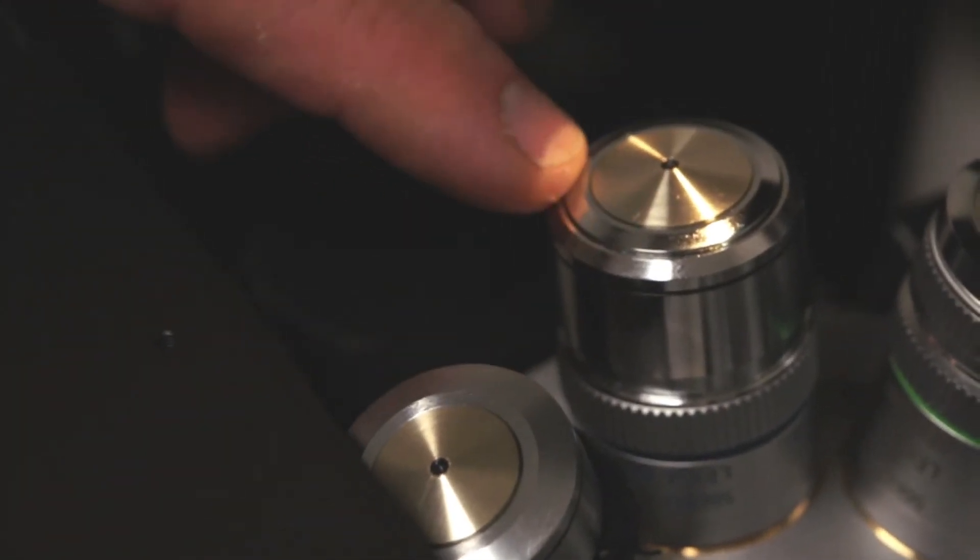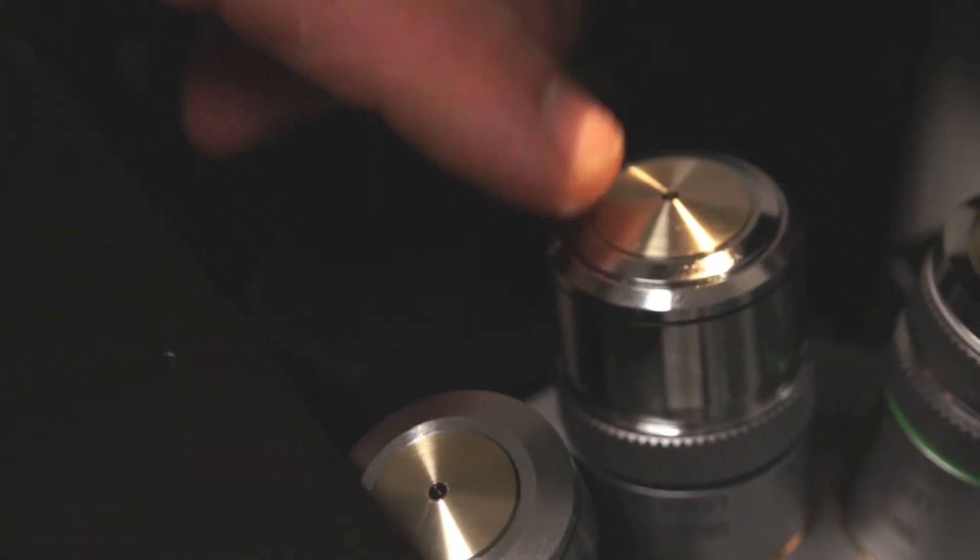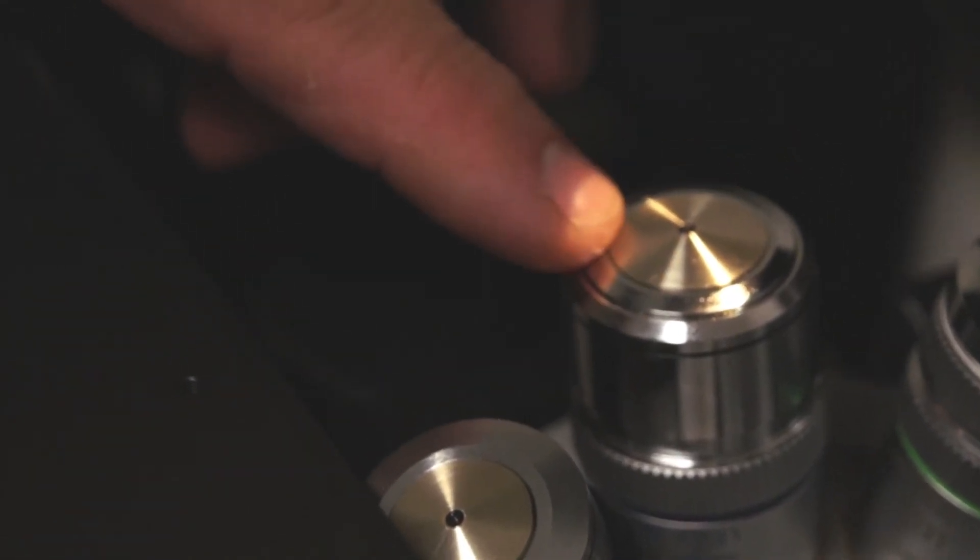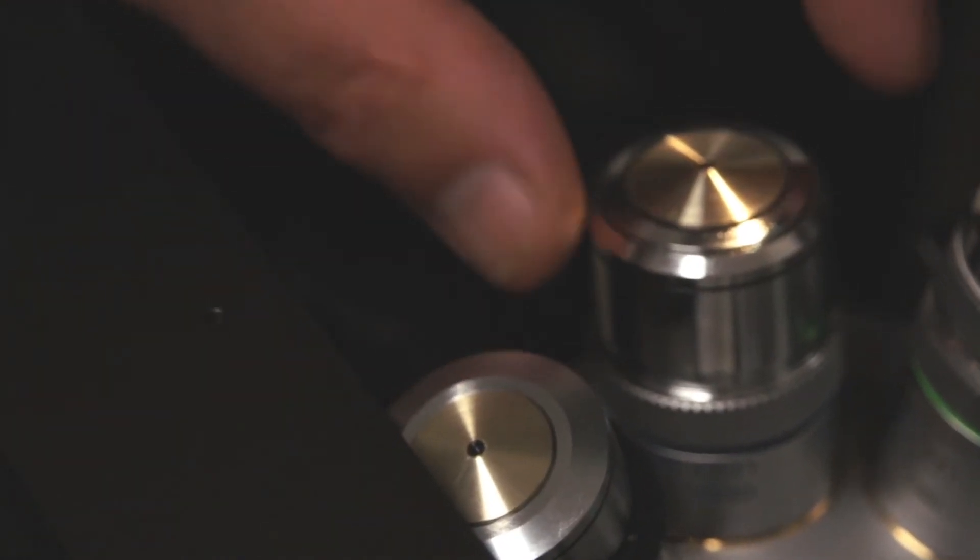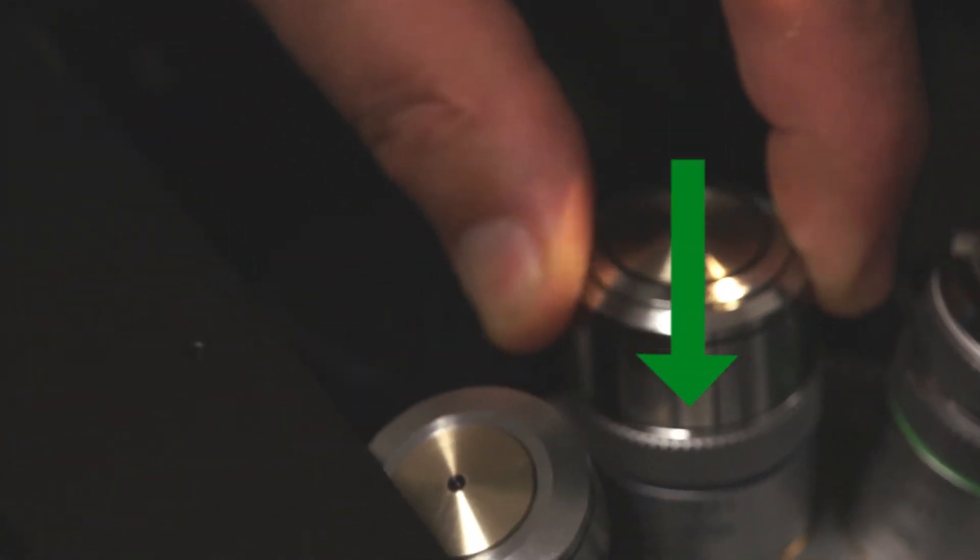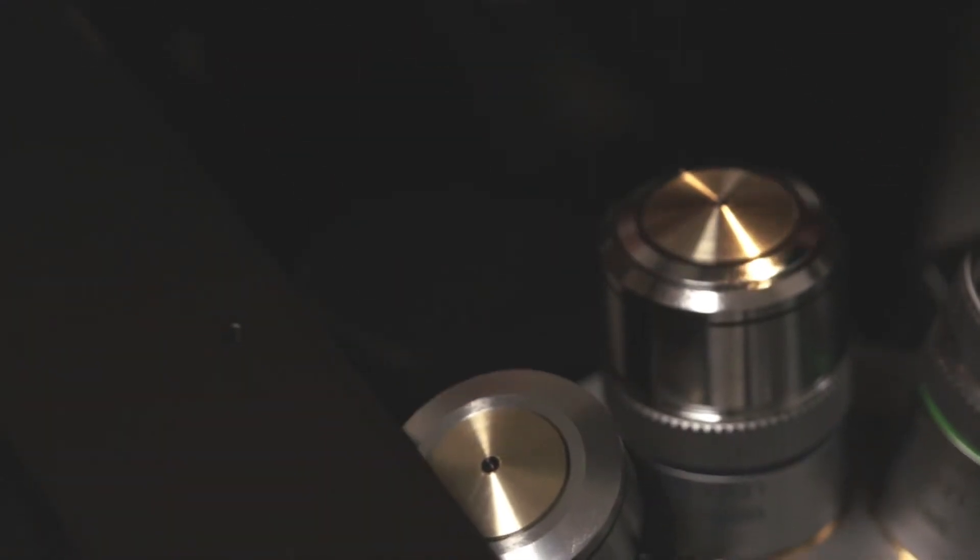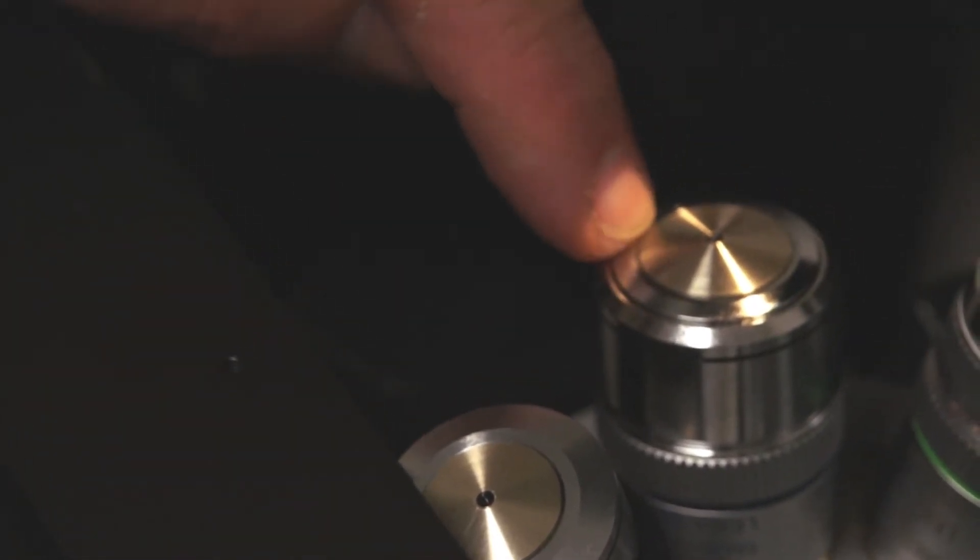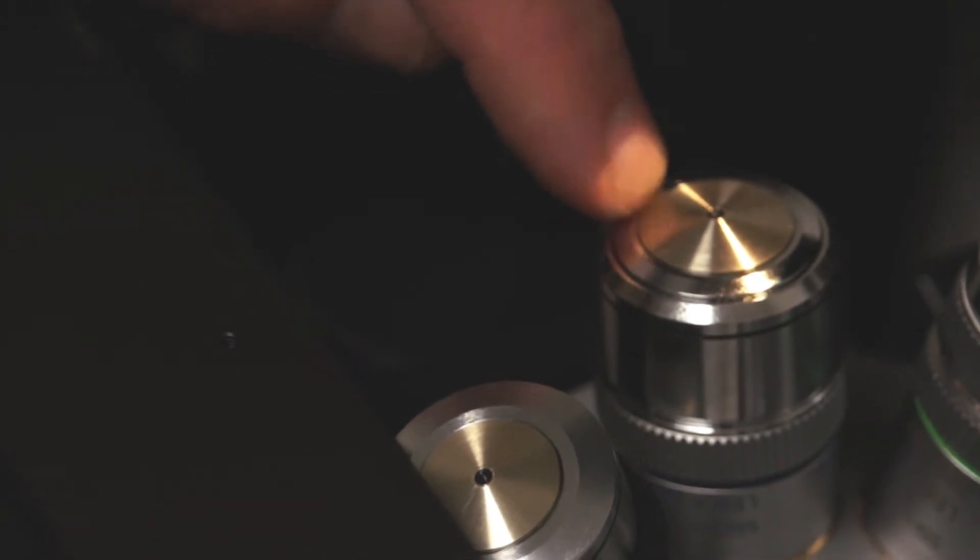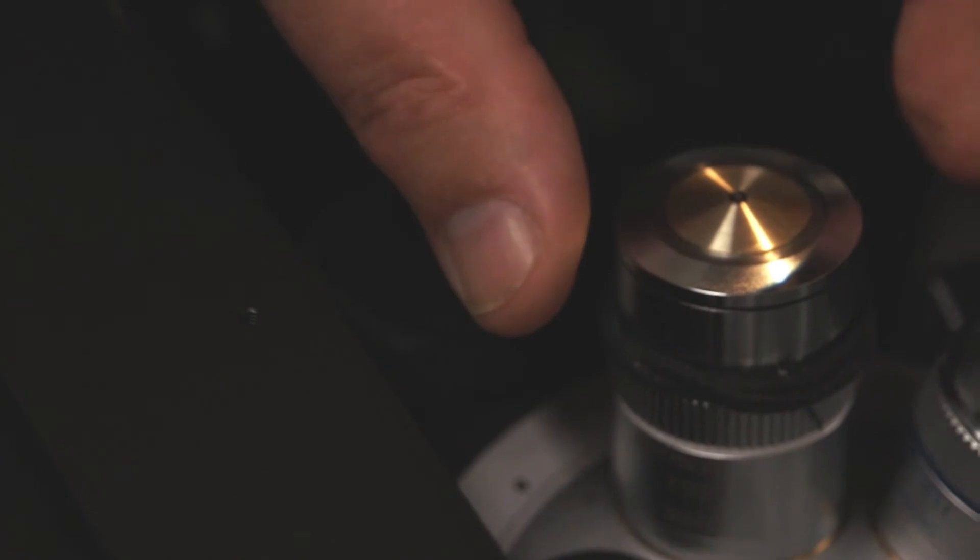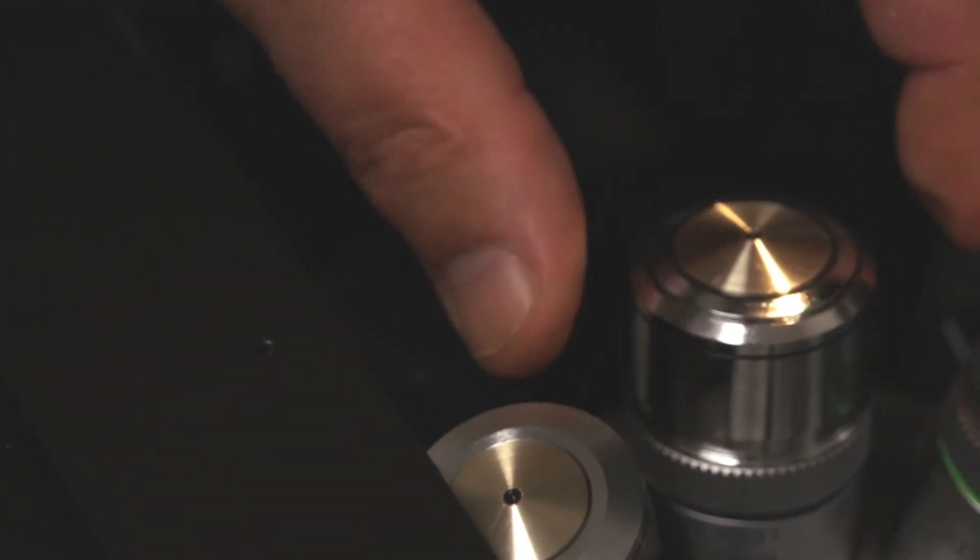Because the 63x objective and the 100x objective are very expensive objectives, they have a unique feature that allows you to lock the front element down and out of the way so that when you are rotating the nose piece, these objectives will not come in contact with the slide. Please keep that in mind as a previous user may have locked it down, so in order for you to do your work, you have to unlock the objective and let it come back to its full height in order for it to work properly.